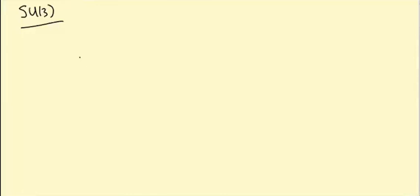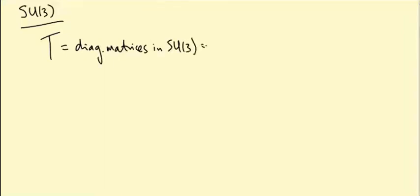When we studied SU2, the key thing we did was to introduce the weight diagram — a way of decomposing the vector space into eigenspaces for the action of the diagonal matrices. In SU3, the group of diagonal matrices is slightly bigger. If we call T the subgroup of diagonal matrices in SU3, this is now actually a copy of U1 times U1.